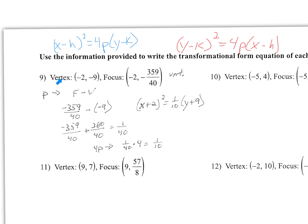In question nine, you're given a vertex of (−2, −9) and a focus of (−2, −359/40). We know it's vertical because the x value is what stays the same — both are −2 — and it's the y value that changes, so it's changing vertically.